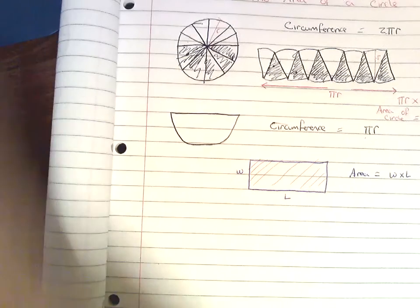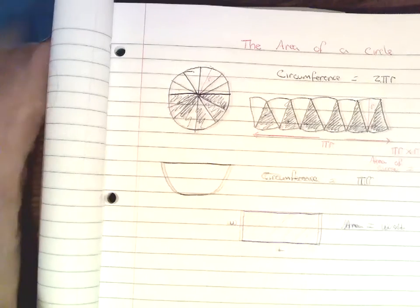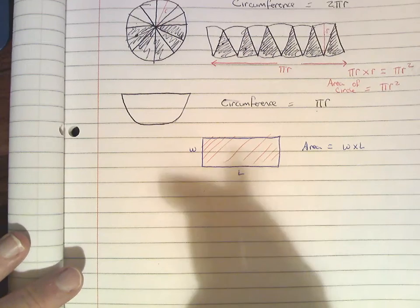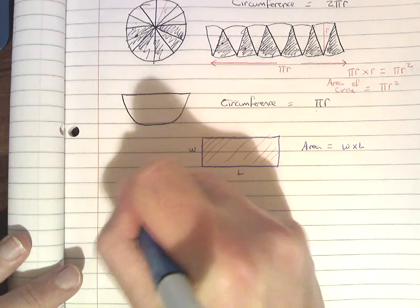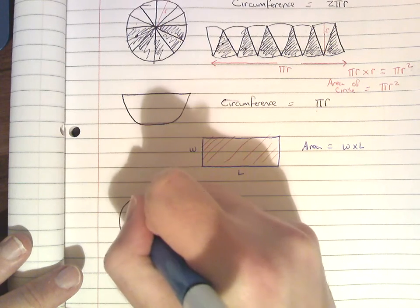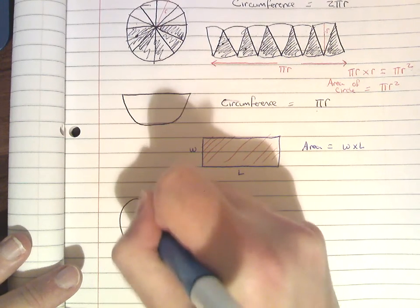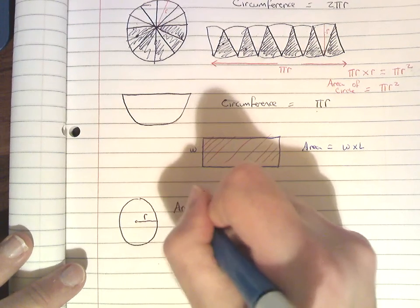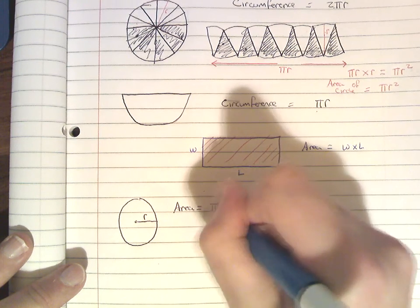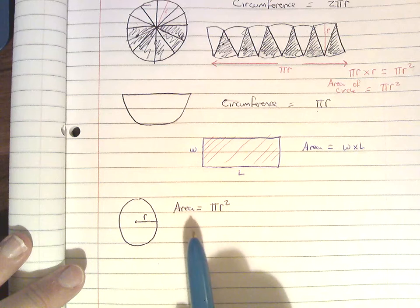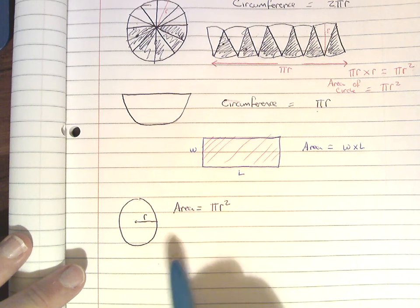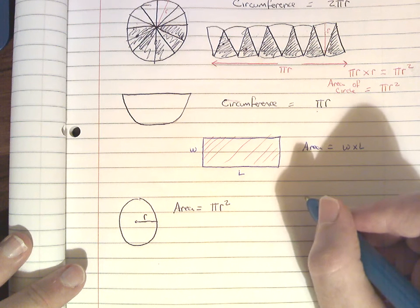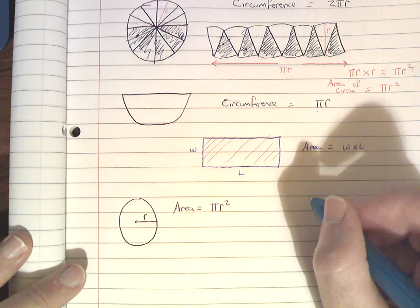So using our formula, if we have a full circle with a radius of r, the area of a full circle is going to be equal to pi r squared. Now, we also need to be able to work out the area of a sector. The area of a sector is just going to be a fraction of the area of the full circle.